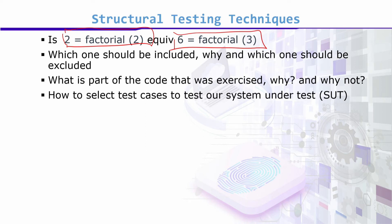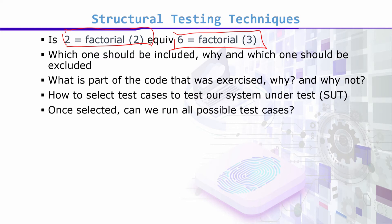What part of the code will be exercised? Why will it be exercised, and why will the remaining part not be exercised? How do we select test cases to test our system under test?